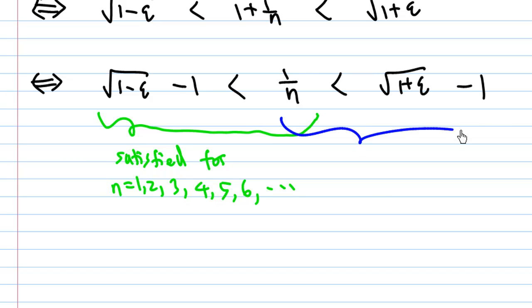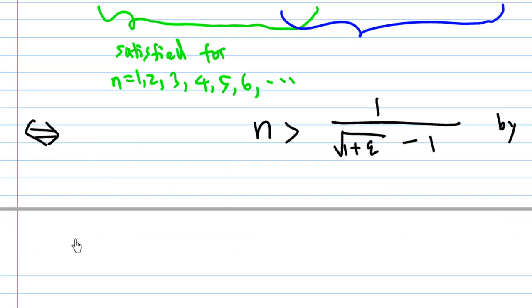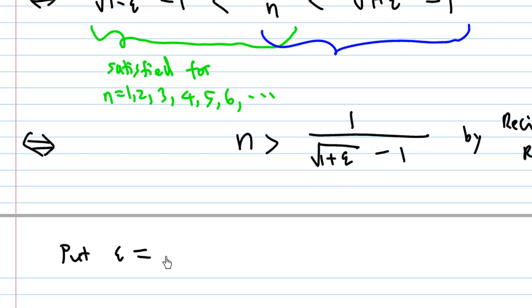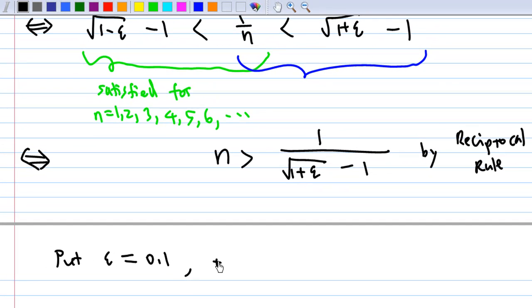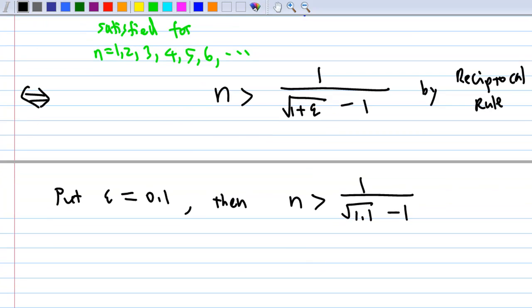Now, how about the right-hand side? Applying the reciprocal rule to the right-hand side, this is the same as n > 1/(√(1+ε) - 1) by reciprocal rule. So if we put ε = 0.1, then n must be greater than 1/(√1.1 - 1). That means n must be greater than 20.48.